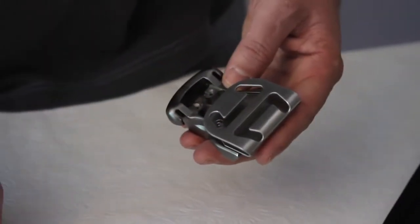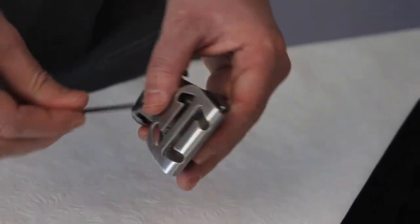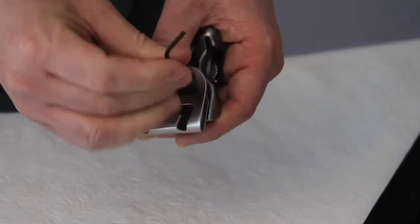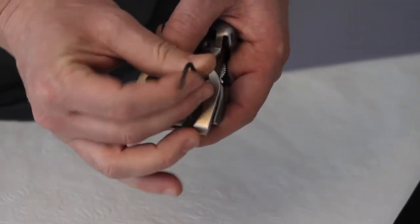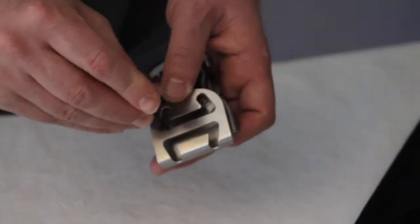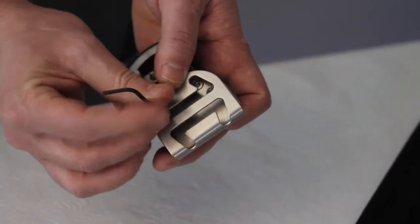Now we're going to actually loosen the main clip. We're going to use the same wrench and we're going to loosen all four screws. So we're completely going to dismantle the Spider stainless steel clip.